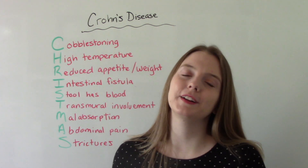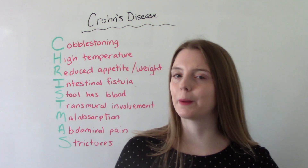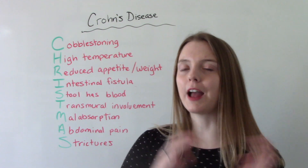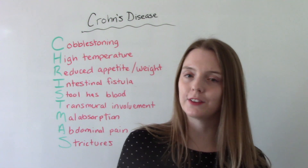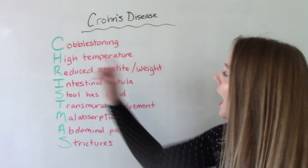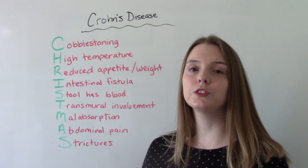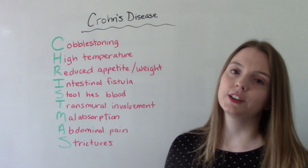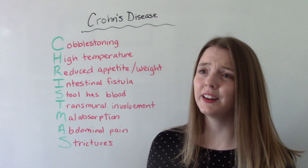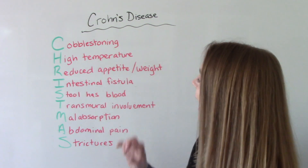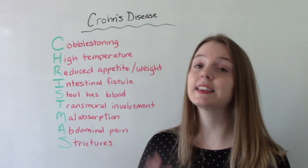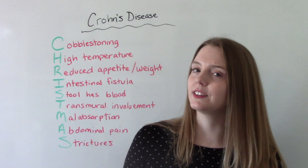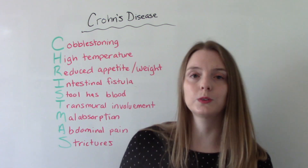When it comes to remembering the signs and symptoms of Crohn's disease, you can remember CHRISTMAS. C is for cobblestoning — you have those patchy areas where you have diseased bowel and healthy bowel. H is for high temperature, so these patients will have high fevers. R is for reduced appetite and reduced weight, so they're not going to be hungry and they're going to lose weight. I is for intestinal fistulas that can form. S is for stool that has blood in it — if you take a stool sample, you would notice blood in it.